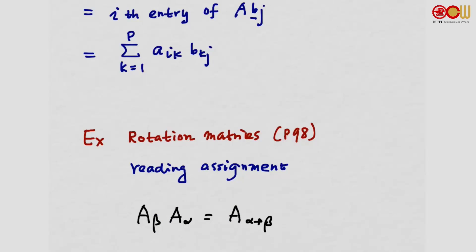An example of a rotation matrix is discussed on page 98 of the textbook. You may find in your reading assignment that A_beta · A_alpha equals another rotation matrix with angle equal to alpha plus beta. This is a reading assignment for you.